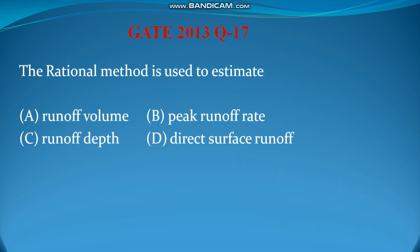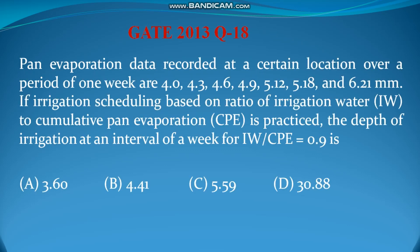Question number 17: the rational method is used to estimate: runoff volume, peak runoff rate, runoff depth, or direct surface runoff? The rational method formula is Q = CIA, which is used to calculate the peak runoff rate. Therefore the answer is peak runoff rate.